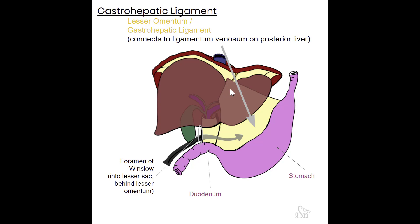The gastrohepatic ligament — gastro meaning stomach, hepatic meaning liver — connects the liver to the stomach. Important features include its connection to the ligamentum venosum and the fact that it is known as the lesser omentum, which includes fat, lymph, and vessels for part of the intestines. It also serves as the roof to the lesser sac of the peritoneum. The lesser omentum connects to the lesser curve of the stomach and runs posterior to the liver to connect to the ligamentum venosum.